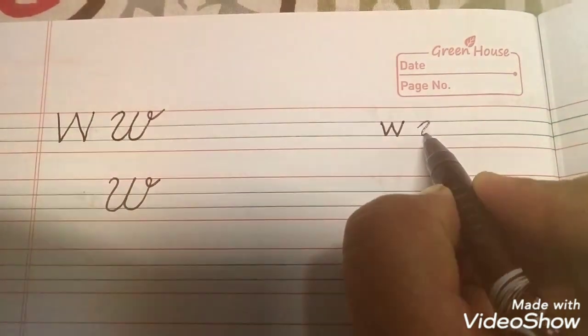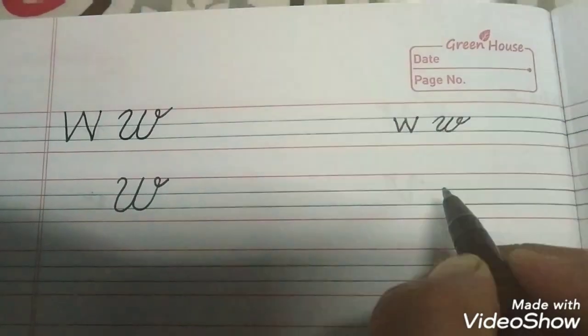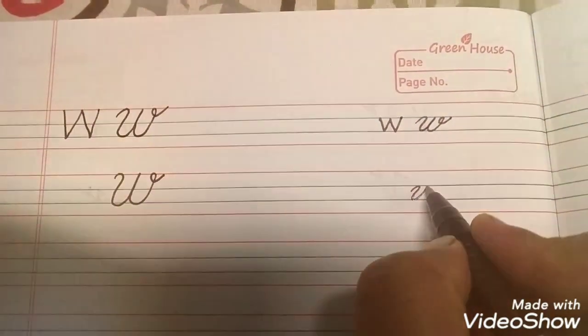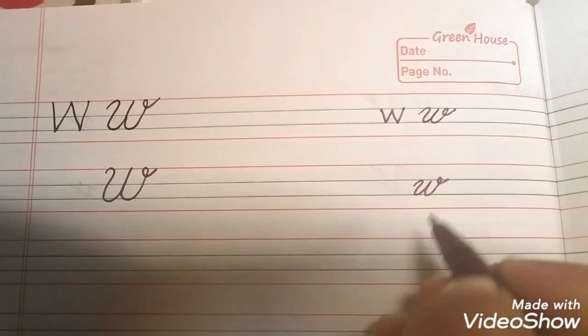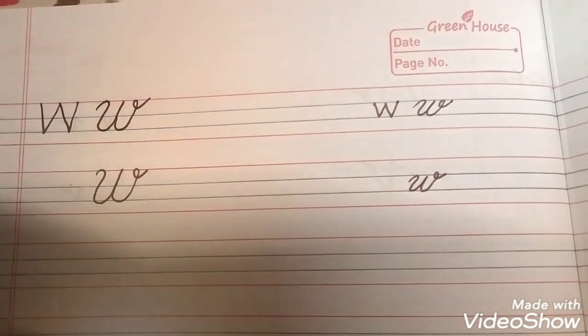Small W like this, okay? Again this way. So you write one page for this, and on the next page, join both of them.